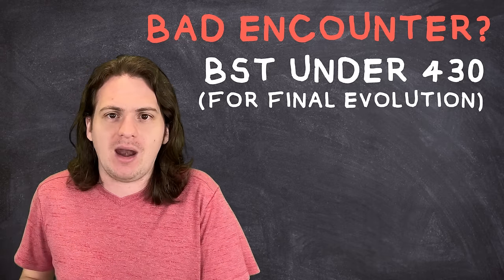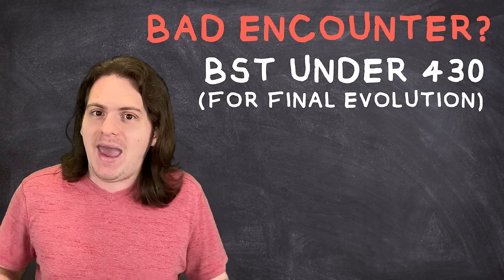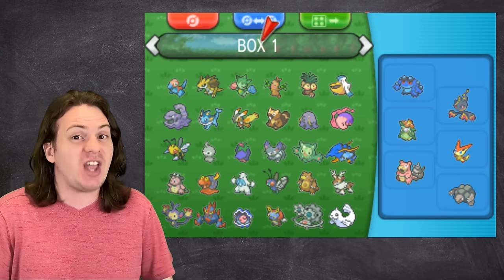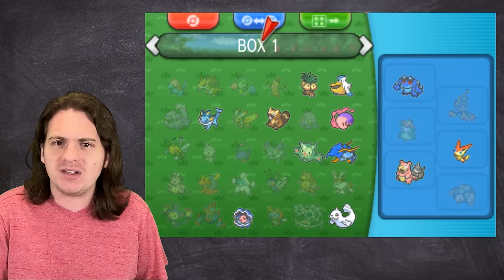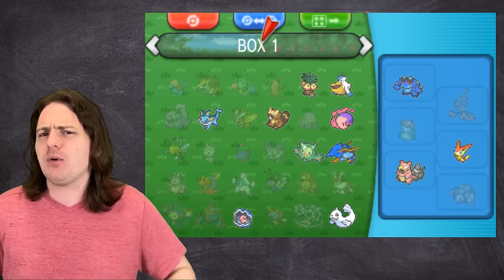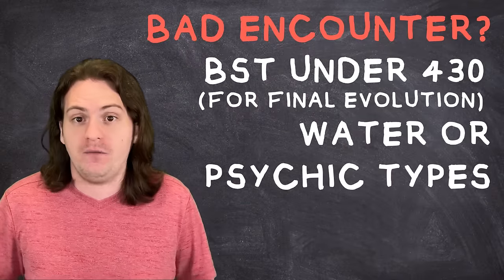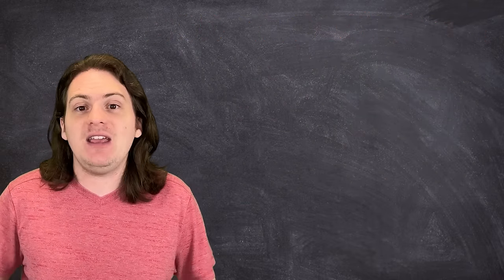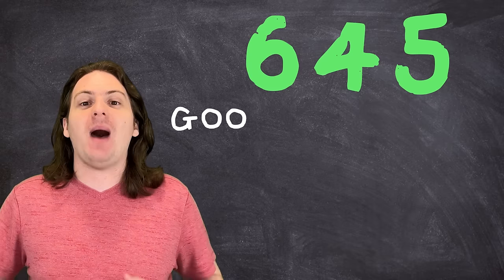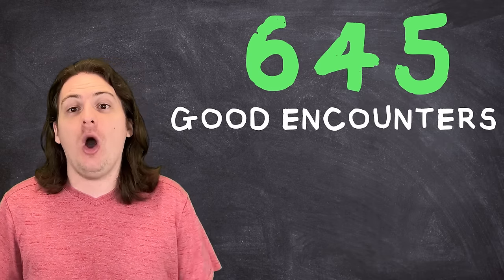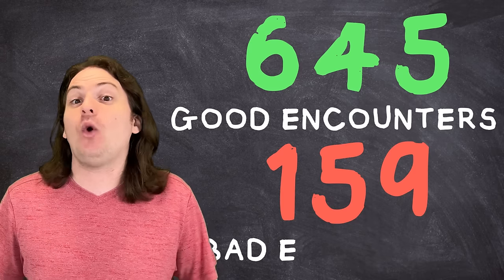And lastly, at this point in the game, I had an abundance of Psychic and Water types in my box, so if I want to be able to craft a well-rounded team for these final battles, I'd prefer not to get another one of those. Using those rules, by my rough estimate, that leaves 645 possible Pokemon that I would've been okay with and only 159 that I would've gotten mad about.